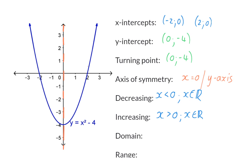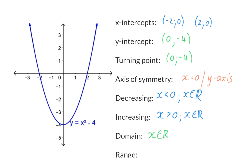Next, determine the domain — all x values that form part of the graph. We draw a vertical line, move it across the axes, and determine where it intersects the graph. In our case it always intersects, so the domain is all real values. For the range, draw a horizontal line and move it from bottom to top. The first time it touches the graph is at minus 4, and it continues intersecting for every value above that. So the range is all y values greater than or equal to minus 4.